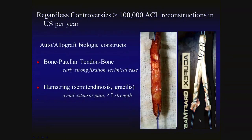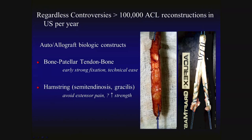Despite that controversy, over 100,000 anterior cruciate ligament reconstructions are performed surgically in the U.S. per year. These reconstructions are typically performed with autograft or allograft biologic constructs. The two most common are bone patellar tendon bone constructs, harvested from the middle third of the patellar tendon with bone plugs from the inferior pole of the patella and tibial tubercle, and hamstring grafts obtained from the distal portions of the semitendinosis and gracilis tendons, which are folded and sutured together to form a four-bundle construct.